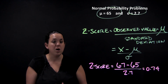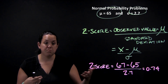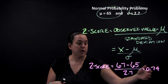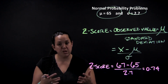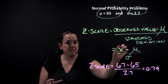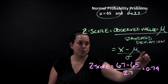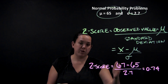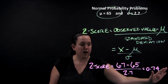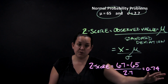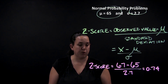I say above the mean because my z-score is positive. If I were to standardize the value of the mean, I would be at 0 — so 65 minus 65 gives a z-score of 0. Zero is the center of the standardized curve. Any value that's positive is above the mean, or to the right, and any value that's negative will be below the mean.